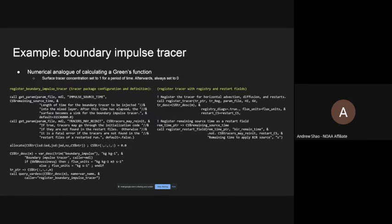One of the tracer packages I'm going to use as a simple example to illustrate how the source code actually looks when developing a new tracer model is called the boundary impulse tracer. This is essentially a numerical analog of a calculated Green's function, where you spike the surface cells to a concentration of one for some period of time, and afterwards it's always set to zero. Think of it like a dye tracer you inject for a certain period of time, after which the surface becomes a sink of that tracer. It has a very simple definition of its sources and sinks, so it's a minimal amount of specific code for this particular tracer.